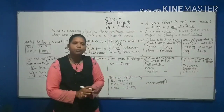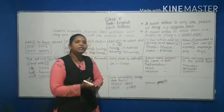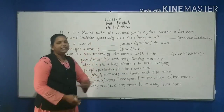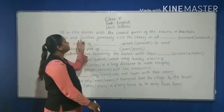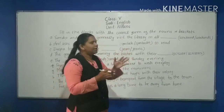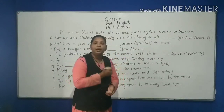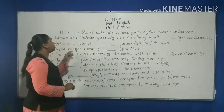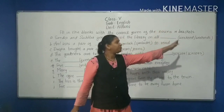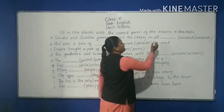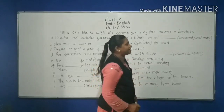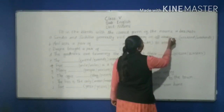I want you to write these rules in your notebook — the table is given in your grammar book. Now we will solve the exercise: fill in the blanks with the correct form of the noun given in the bracket. The first example: 'Sandeep and Sujika generally visit the library on all ___.' Since 'all' indicates plural, we choose 'weekends'.